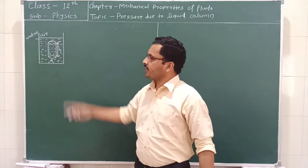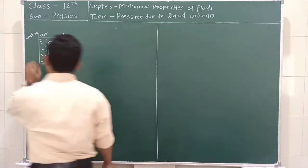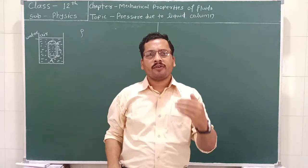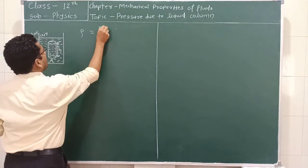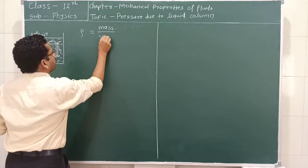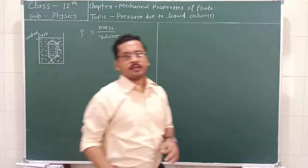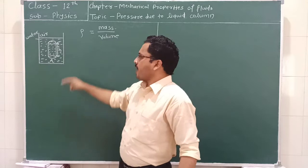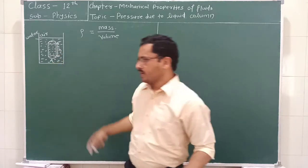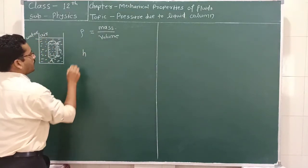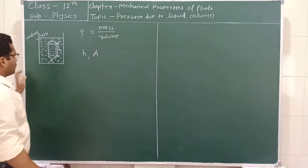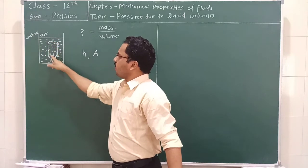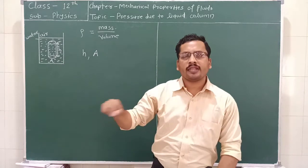To derive this relation, consider a liquid taken into a container. The density of this liquid is equal to rho, where density is nothing but mass divided by volume. We consider an imaginary cylinder inside this liquid having height H and area A.